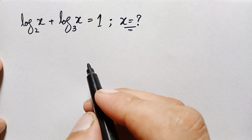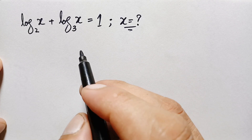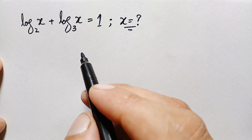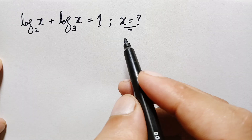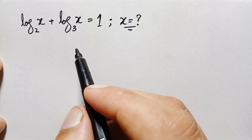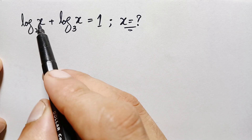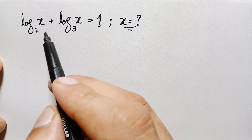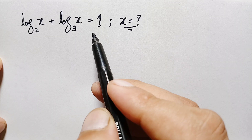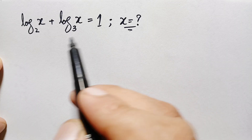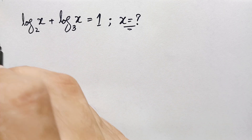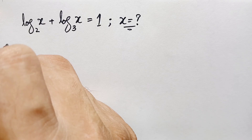Hello everyone, welcome. In this video I am going to solve and find the value of x in this interesting logarithm math problem, which is log of x with base 2 plus log of x with base 3 is equal to 1. How can we solve this math problem? So let's start our solution.